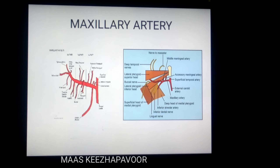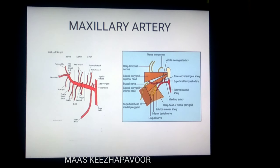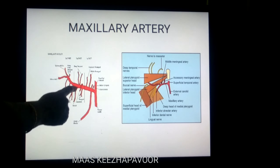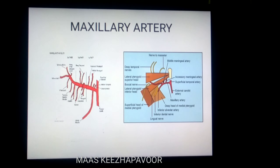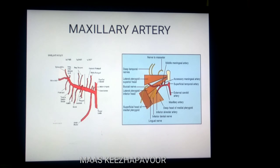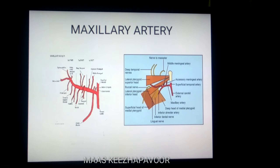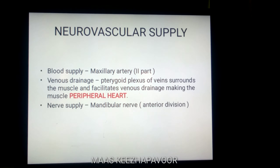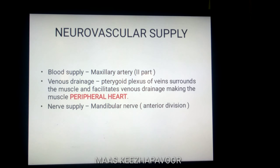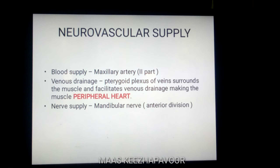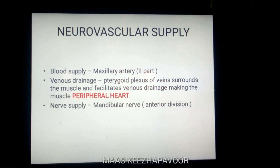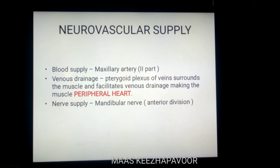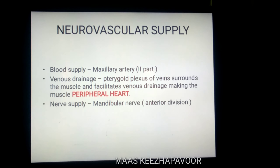You can observe the maxillary artery having three parts. Remember — all the muscles of mastication are getting their blood supply from the second part of the maxillary artery. So the lateral pterygoid muscle is getting blood supply from the second part of the maxillary artery. The pterygoid plexus of veins surrounds the lateral pterygoid muscle and facilitates venous drainage. Since it facilitates the venous drainage, it is called the peripheral heart. The anterior division of the mandibular nerve is going to supply the lateral pterygoid muscle.